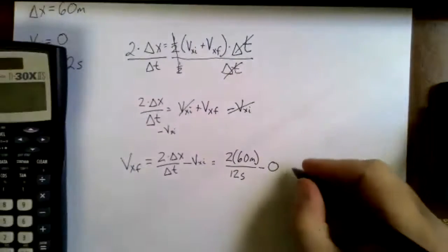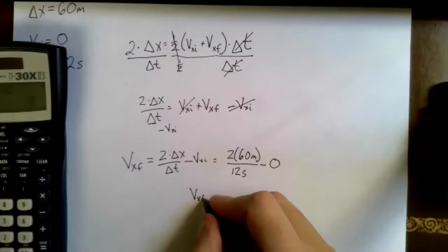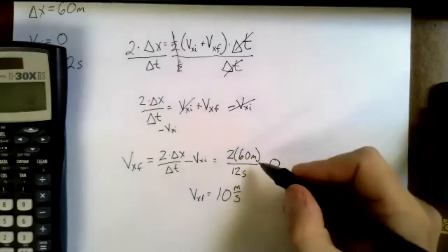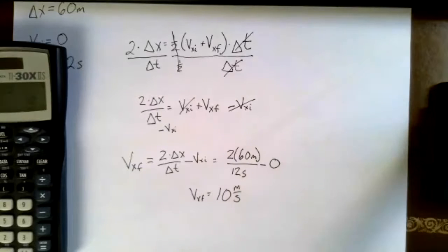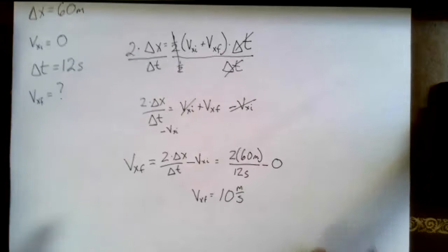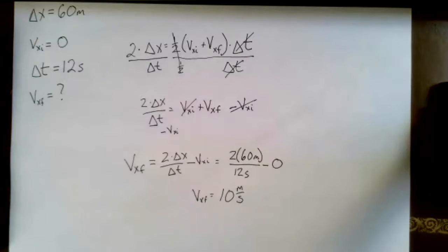So we get a final velocity of 10 meters per second. It's meters per second because meters up here, seconds down there. Our units work out well and 10 meters per second for something accelerating for 12 seconds seems reasonable enough to me.